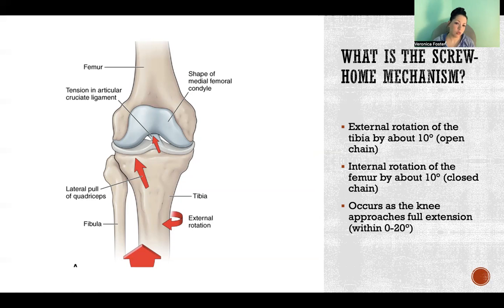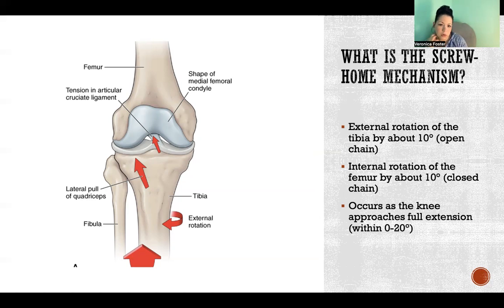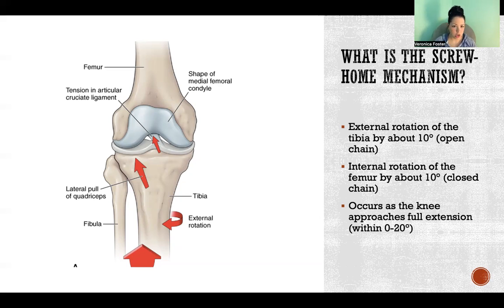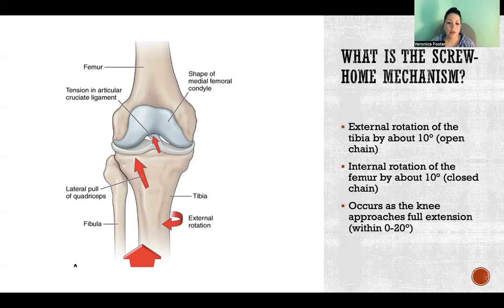Which bone is rotating in which direction depends on whether the movement is open or closed chain. If the movement is open chain — meaning the tibia, the leg, is what's moving as opposed to the thigh — then there's external rotation of the tibia that takes place. For example, in a knee extension exercise where the femur is in a fixed position and the tibia is moving up into extension, the tibia would rotate externally by about 10 degrees to align properly with the condyles of the femur.